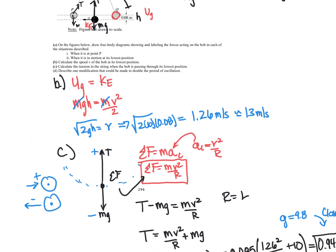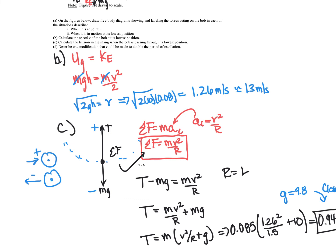Now let's look at part D. So part D is not a math problem. It's saying describe one modification that could be made to double, that's very important, double the period of oscillation.